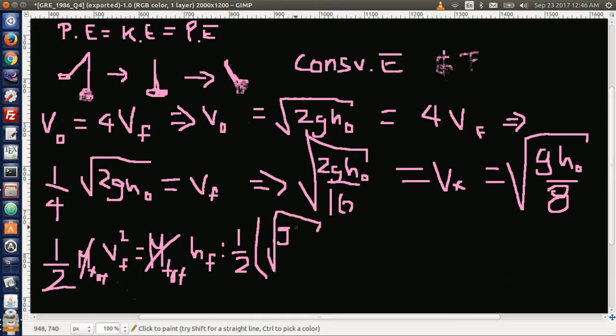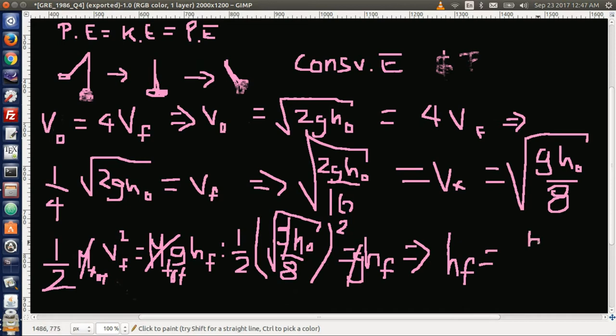So that equals one half times the square root of gh₀ over 8, squared. I'm substituting in v final there. This equals g times h final, and the g's cancel out. So we have h final equals h₀ over 16.